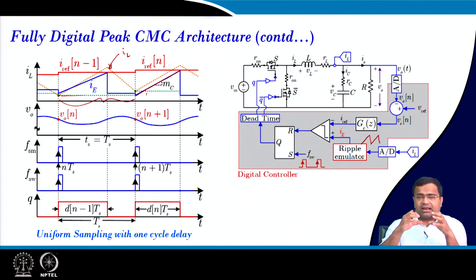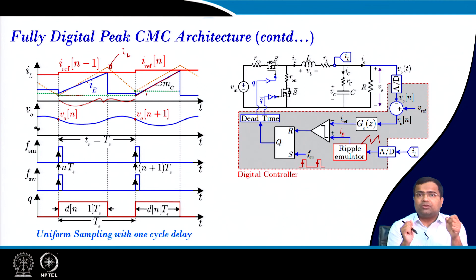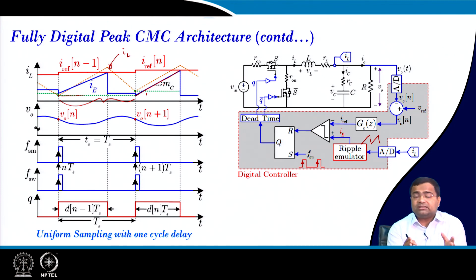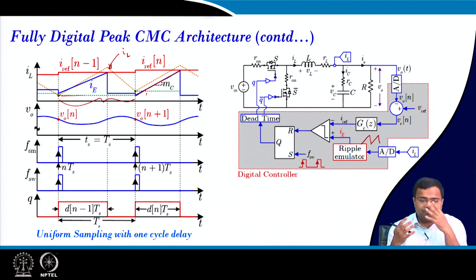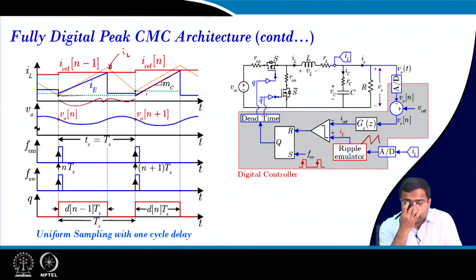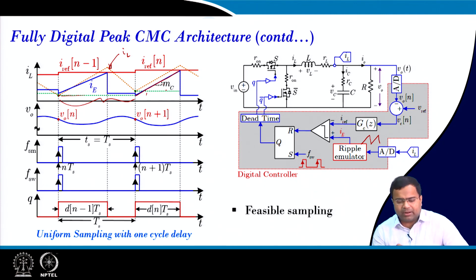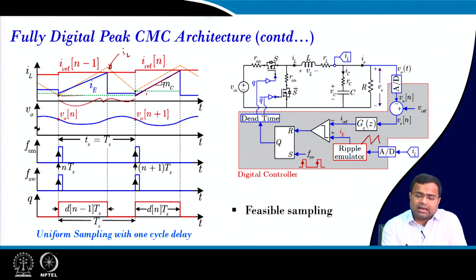When analyzing current loop stability, because of this one-cycle sample delay, even using the same slope it will not be stable. The emulated slope m_c has to be larger than the rising slope of the actual inductor current, otherwise the current loop will be unstable because of the one-cycle delay. We will analyze this in the modeling and stability analysis, approximately in week 4 or week 5. We cannot choose m_c equal to m_1 as it will be inherently unstable, but this one-cycle delay is a feasible sampling approach where we must suitably select m_c.